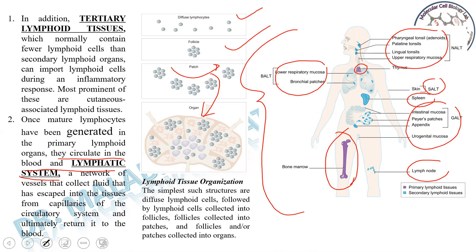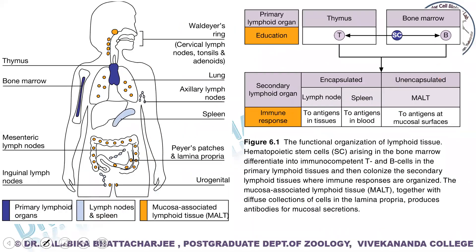Moving down this lane of understanding the lymphoid organs, we'll start with our primary lymphoid organs — the bone marrow and the thymus — and then move on to the secondary lymphoid organs. The primary lymphoid organs are marked in blue, and the lymph nodes and spleen are the secondary lymphoid organs. The mucosal-associated lymphoid tissues are present all over the mucosal lining of the body.